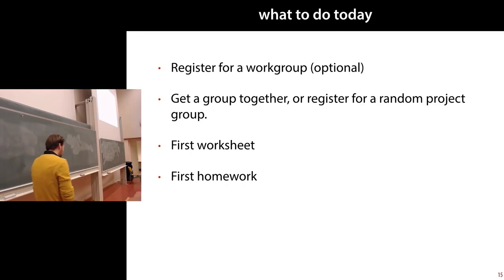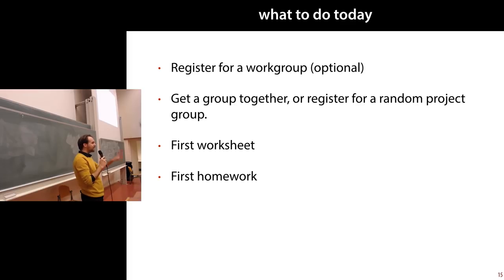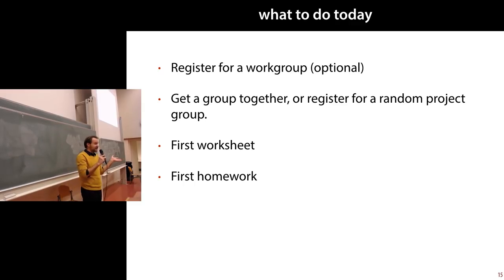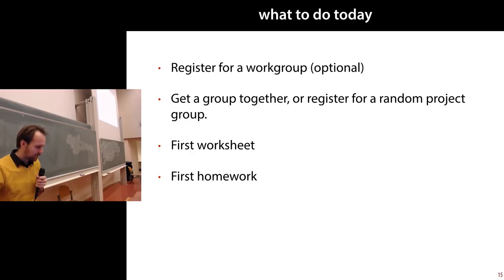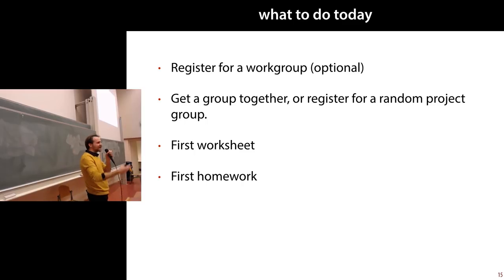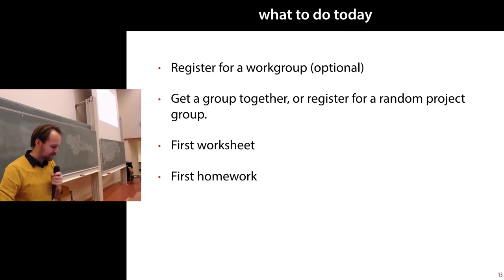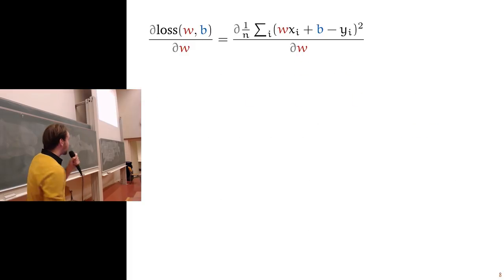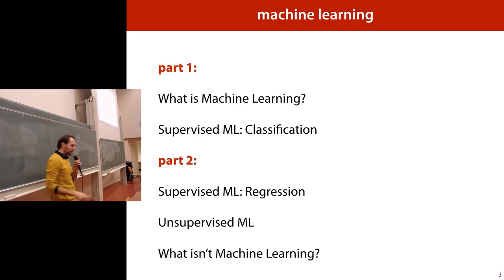The rule is: if there's still room in a group, anybody can click on the group and join. So if you have five people you want to work with, make sure you get them together and form a group right away, because otherwise someone else is going to join the group — and that's allowed. So that's all the administrative stuff. That's how the course works.